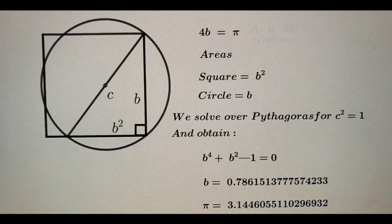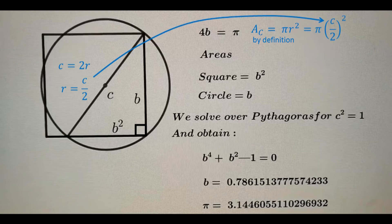So, let's investigate a little further. Now, by definition, the area of a circle is pi r squared. In this example, r is c over 2, so the area of the circle is pi c over 2 quantity squared.